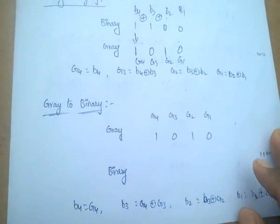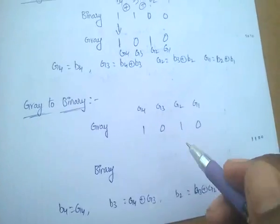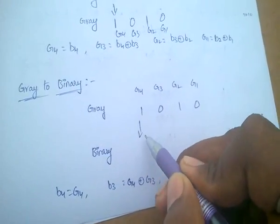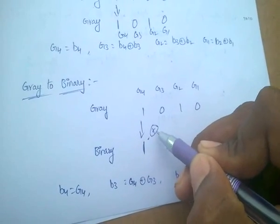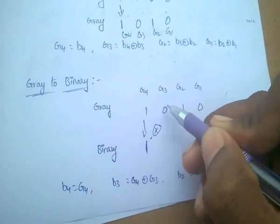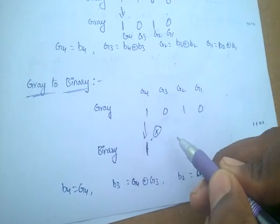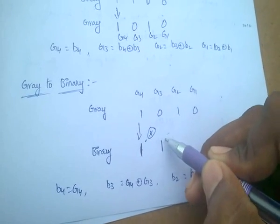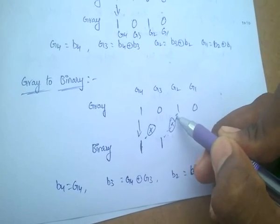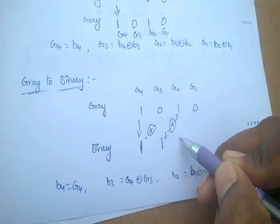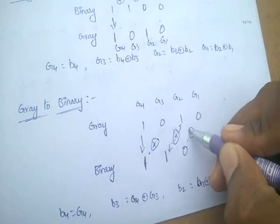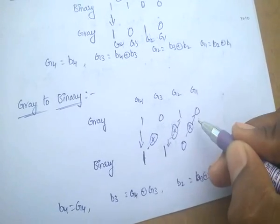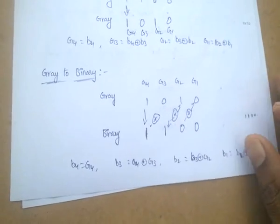And next, conversion of gray to binary. For this also, write down the first MSB as same. And next, find the exclusive-OR between adjacent bits. For example: 1 XOR 0 gives 1; 1 XOR 1 gives 0; 0 XOR 0 gives 0. Likewise, we can convert gray to binary.